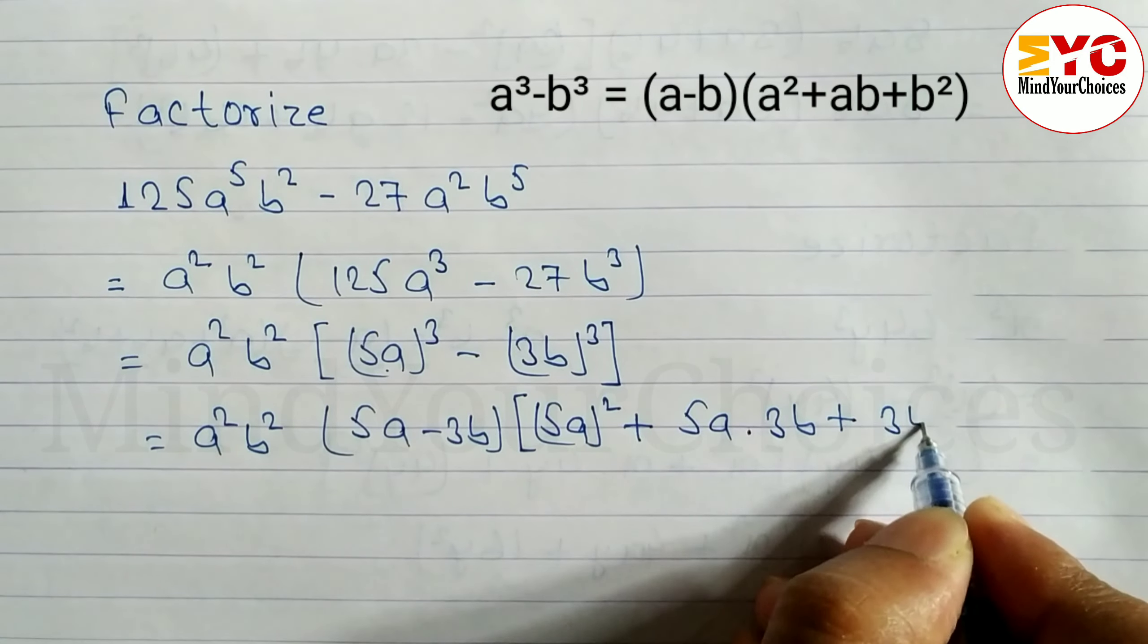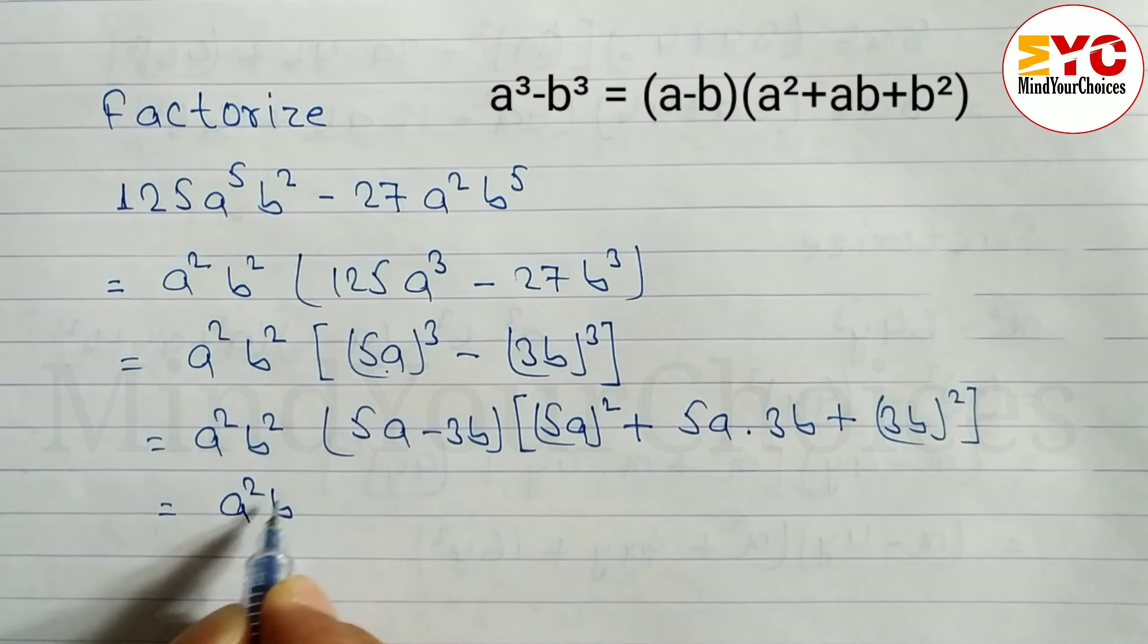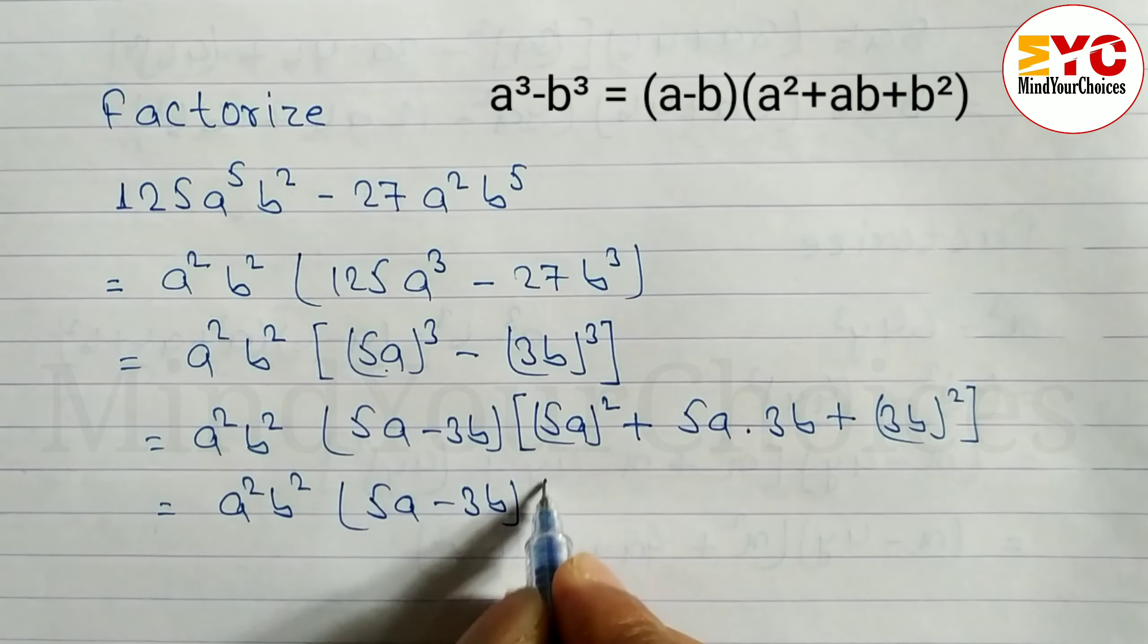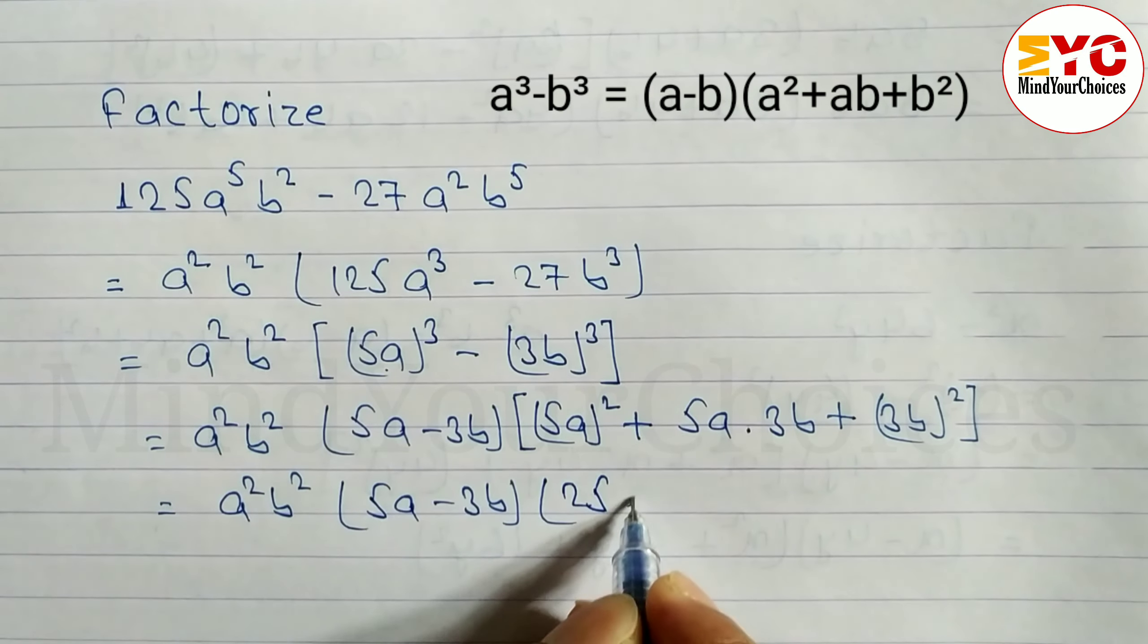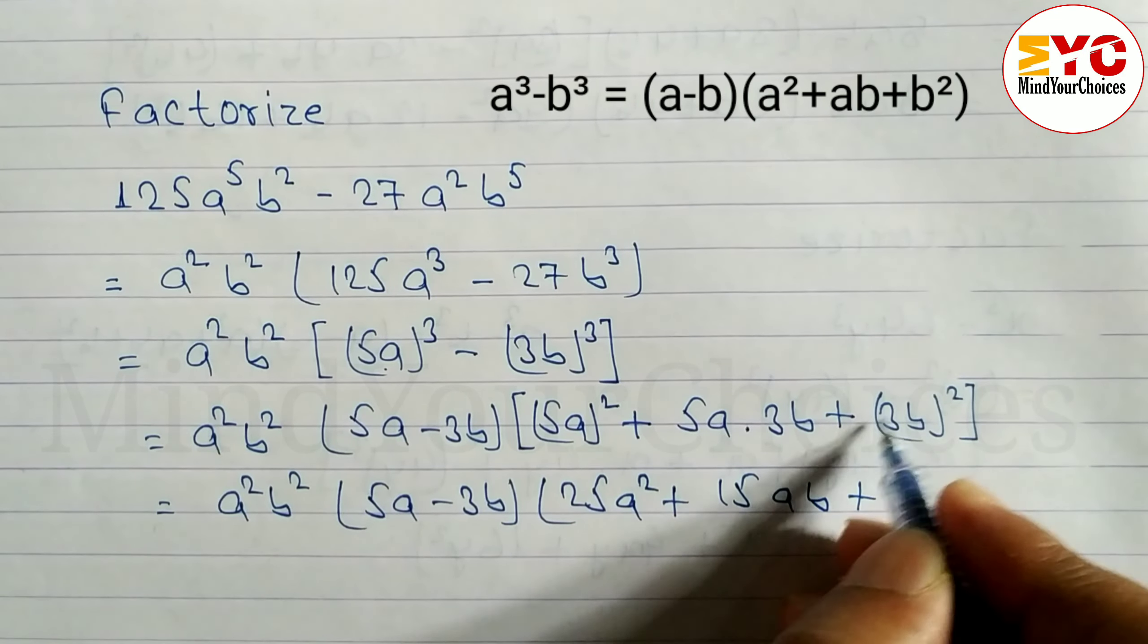We can write (3b)². Now let's calculate: a²b²(5a - 3b), then 5a² means 25a², plus 5×3 = 15ab, plus 3² = 9b². This is your answer.